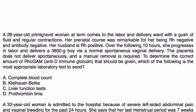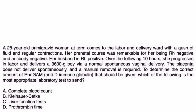Let's take a look at some clinical vignettes. A 28-year-old primigravid woman at term comes to labor and delivery ward with a gush of fluid and regular contractions. Her prenatal course was remarkable for her being Rh negative and antibody negative. Her husband is Rh positive.